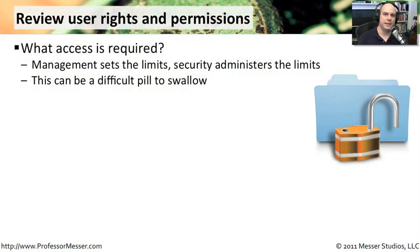Another way to mitigate risk is to make sure that people only have access to the resources necessary for them to do their job. Sometimes this access can be a difficult one. Some people may feel they require more access to the network. You walk into some environments and almost everybody is an administrator on the network. Other environments, maybe only one or two people are.